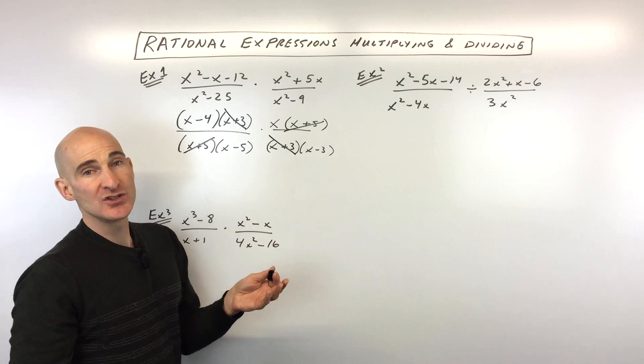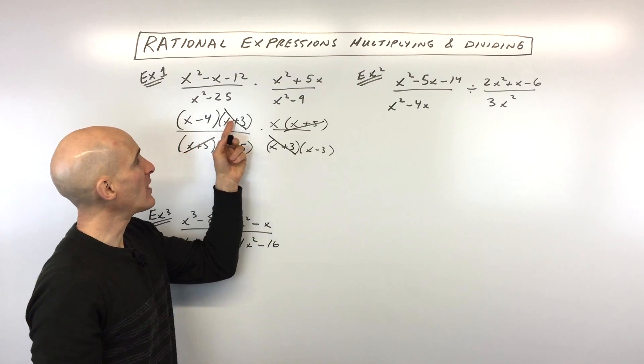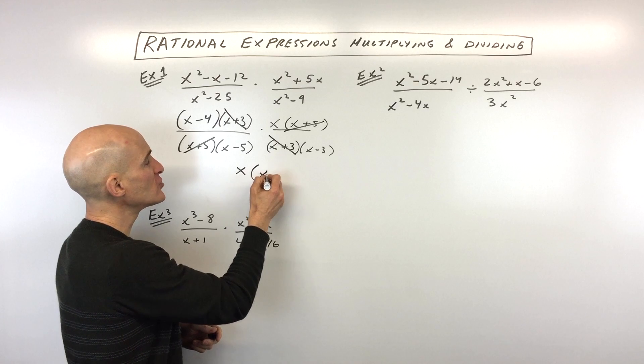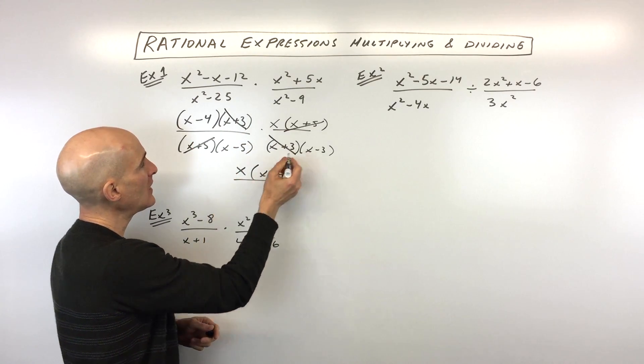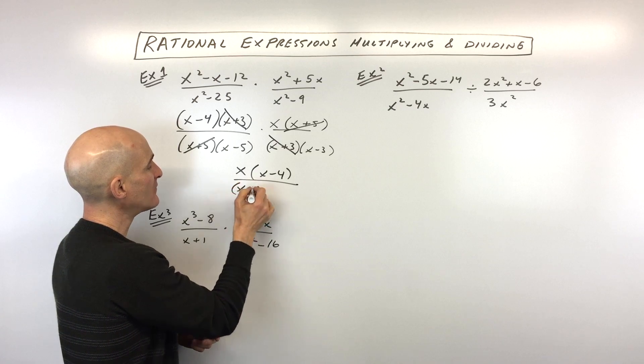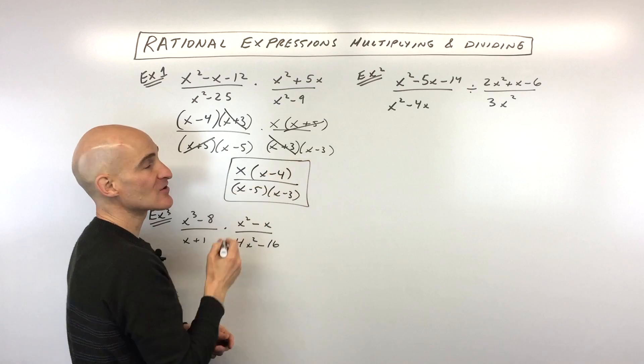And that's really all that we can do. That's all the factors that are the same in the top and bottom. So at this point, we multiply the numerators together. But you don't have to really foil it out. Usually your teacher will just say leave it in factored form. So that's x times x minus 4. And in the denominator, we have x minus 5 times x minus 3. And that's our final answer.